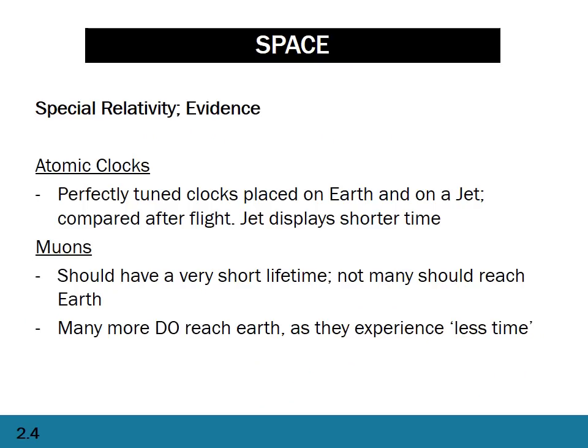We have evidence for the principles of special relativity. First, atomic clocks: one placed on Earth, one put in a jet that flies around the Earth and comes back. Comparing the clocks shows clearly that the one that traveled faster experienced less time. Second, muons: muons are particles with a very short lifetime, so we know how many should reach Earth. In fact many more do reach Earth, because they're traveling so fast that they experience less time. These are key points of evidence that special relativity is true.